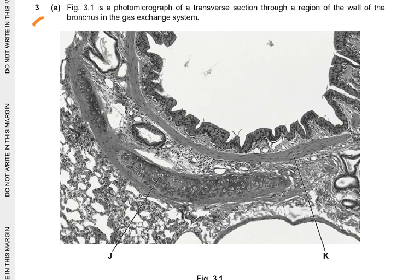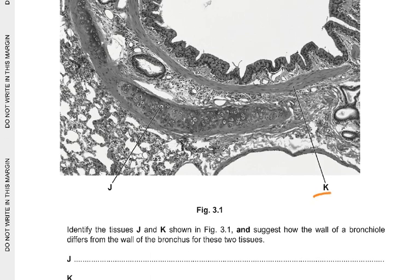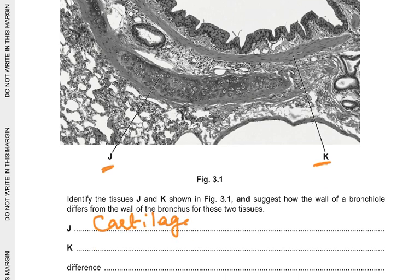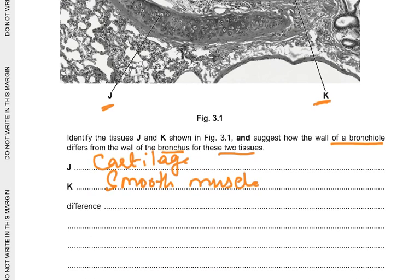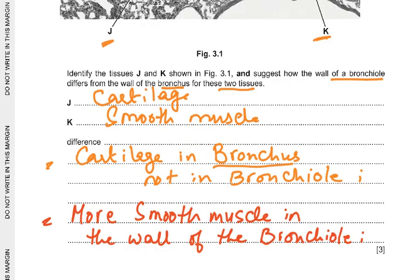Question 3: Figure 3.1 is a photomicrograph of a transverse section through the wall of the bronchus in the gas exchange system. Identify tissues J and K: J is cartilage and K is smooth muscle. Suggest how the wall of a bronchiole differs from the wall of the bronchus for these two tissues: cartilage is present in the bronchus but not in bronchioles; there is more smooth muscle in the wall of the bronchiole.